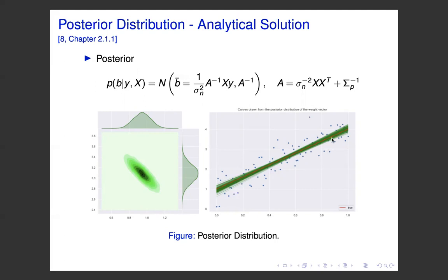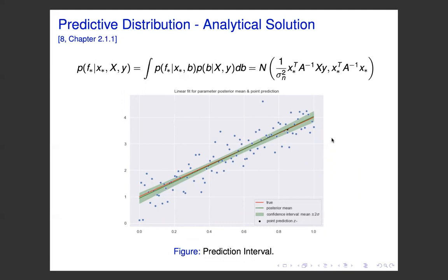To make predictions we need to average over the posterior distribution for any input point x*. During this presentation, x* denotes the test set or out-of-sample observations on which we generate predictions after inference. The predictive distribution is again a multivariate normal. It is important to note that the credible intervals here are about the latent variable f; if we want credible intervals on the observations themselves, we need to add the noise variance, which makes the intervals considerably wider.